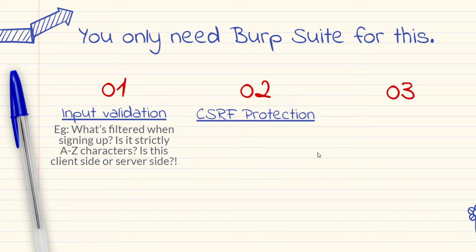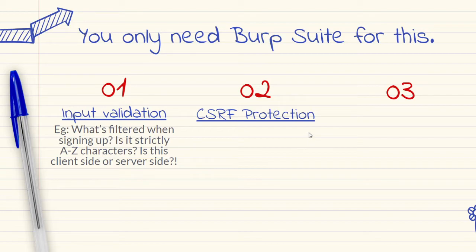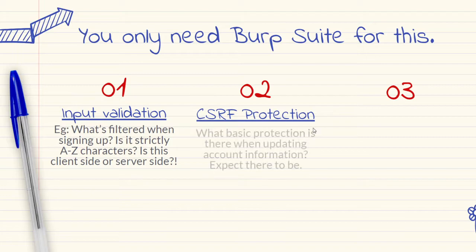I accidentally clicked a little bit too soon there with the cross-site request forgery slide. So with cross-site request forgery protection, you want to assume that there is protection and you want to see that token, but it's about understanding how it works and what's actually required. I'm going to move on briefly and come back to the cross-site request forgery bit in just a second.